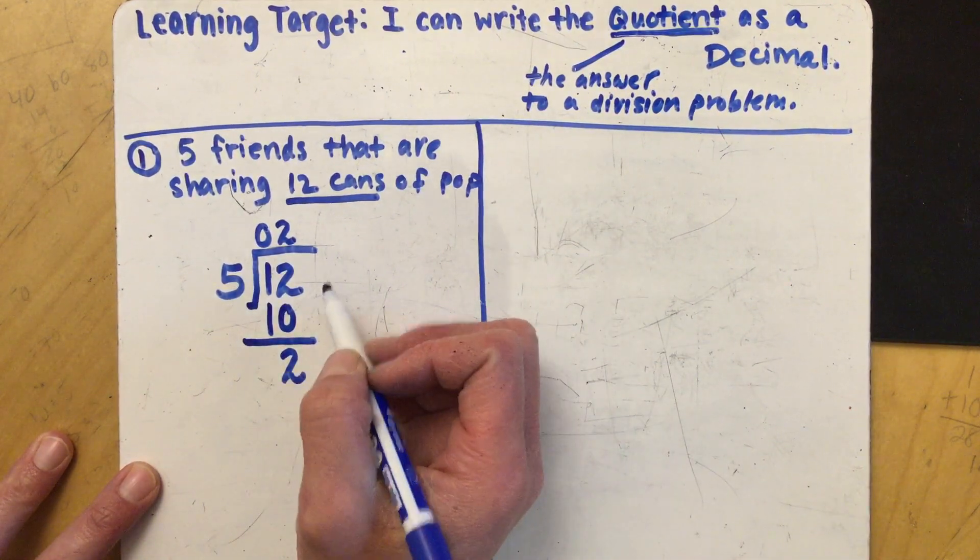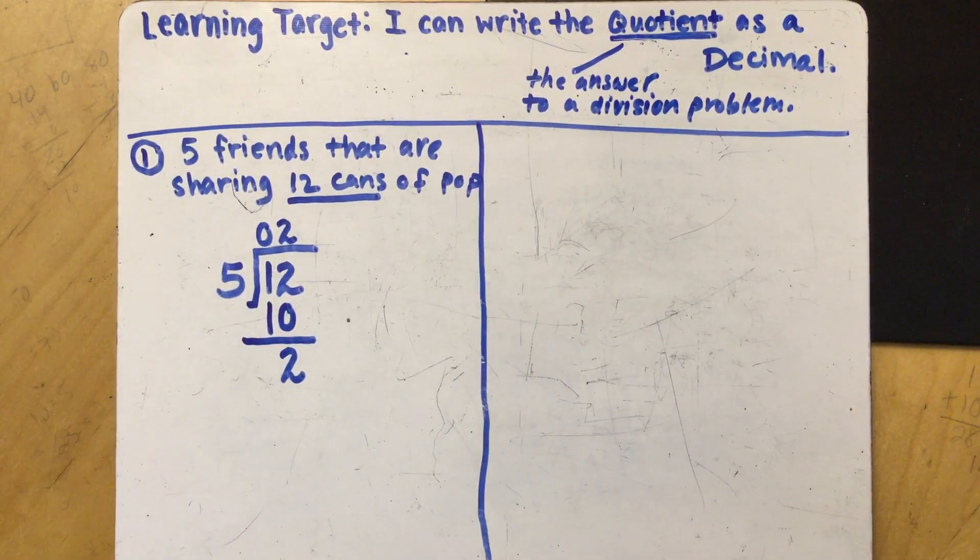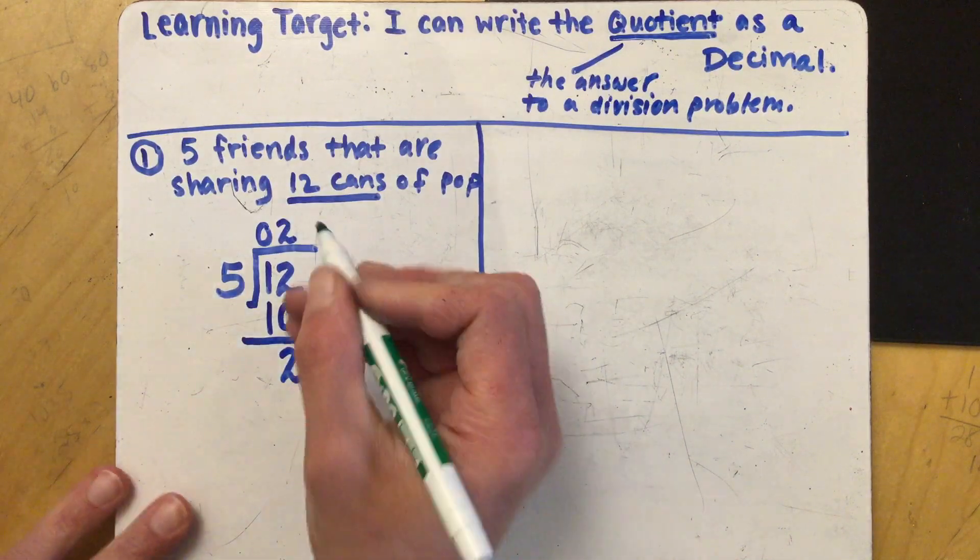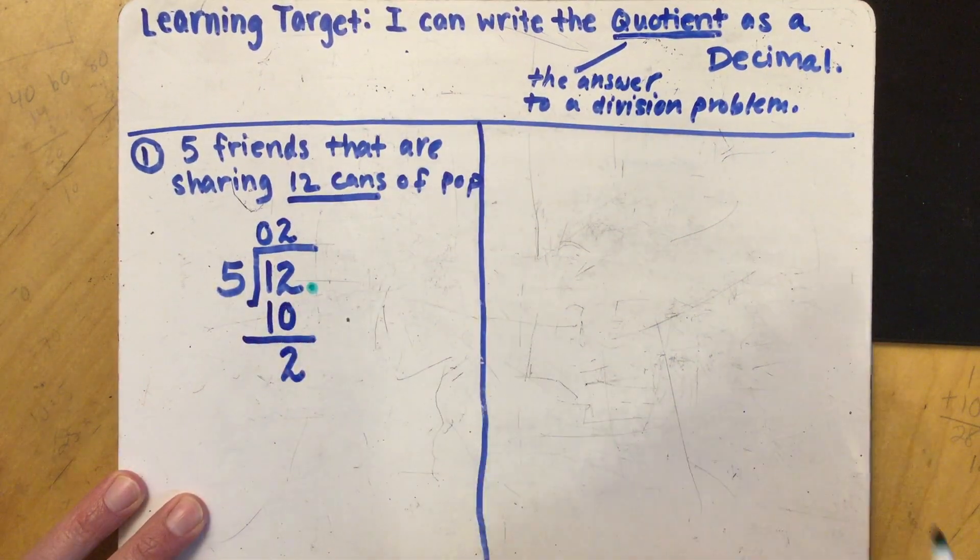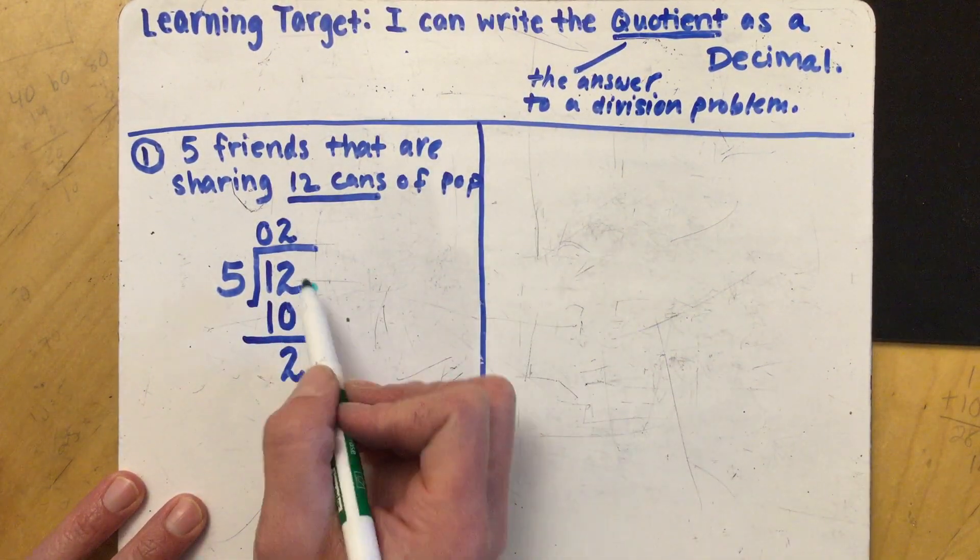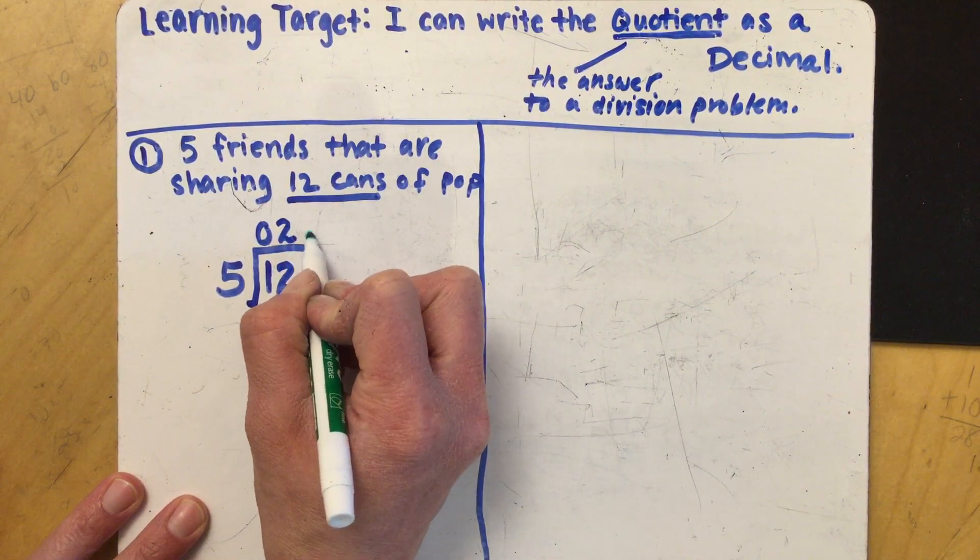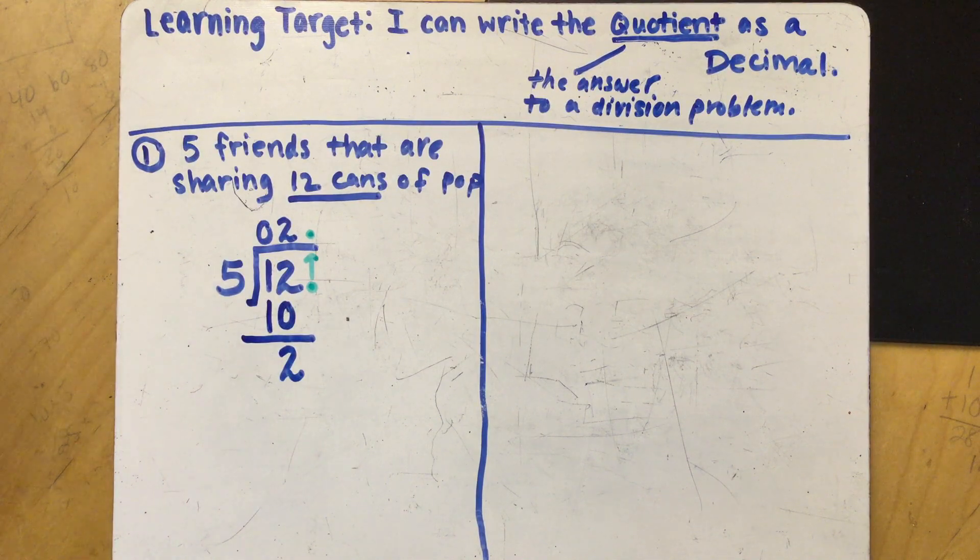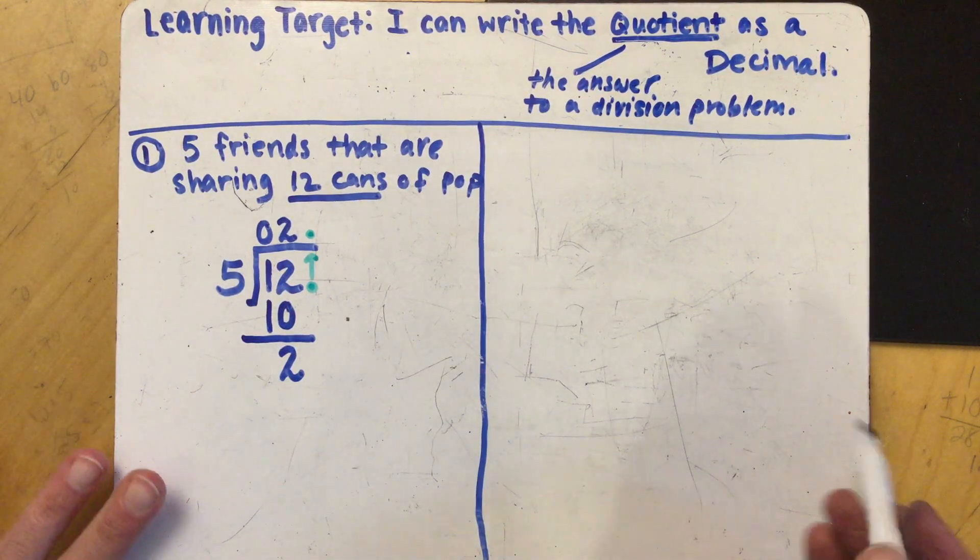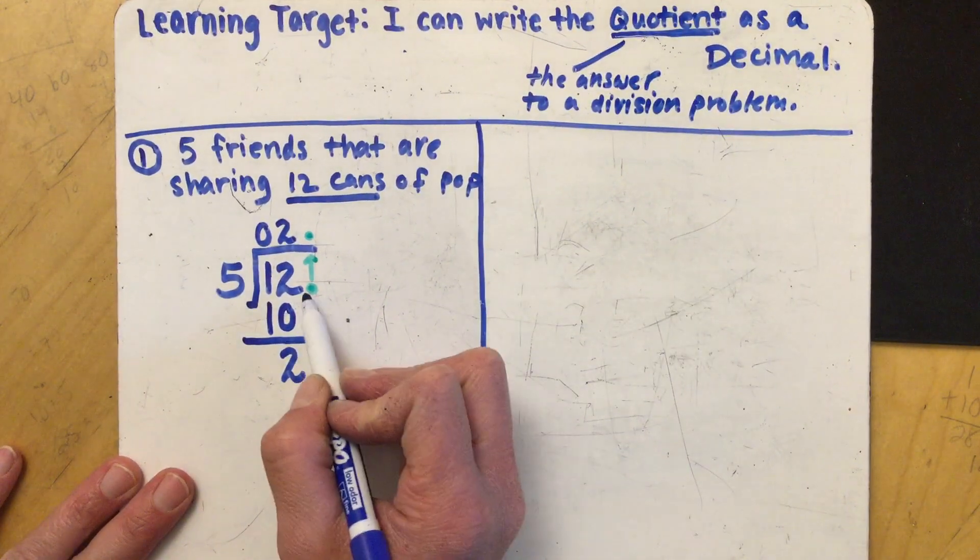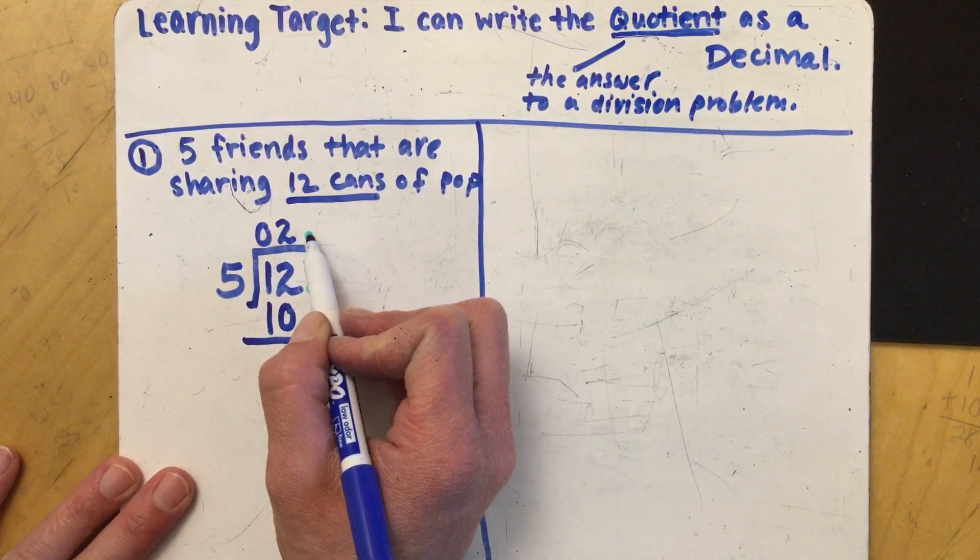So what that means is we want to get rid of any remainders. And how we do that is we're going to go ahead and add in a decimal point. Change my color here. And with the decimal point we want to put it there and then we want to bring it straight up.